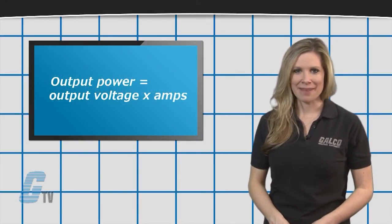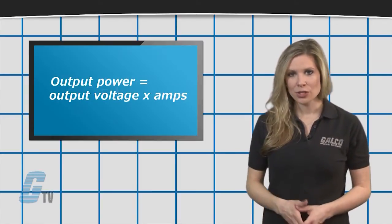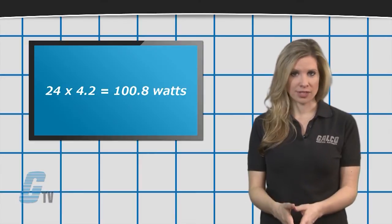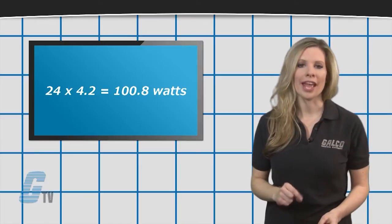To calculate my output power, I will multiply my output voltage by the amps. So for a 24 volt power supply with a 4.2 amp current rating, I should get 100.8 watts.